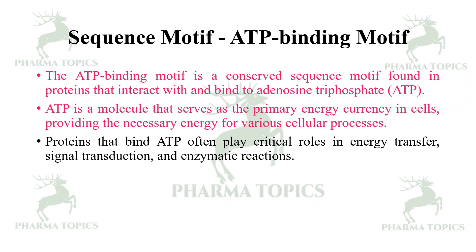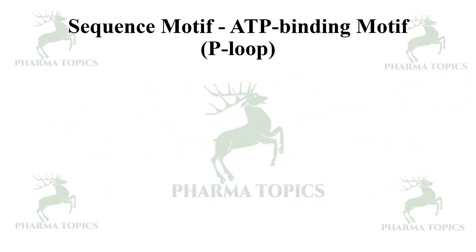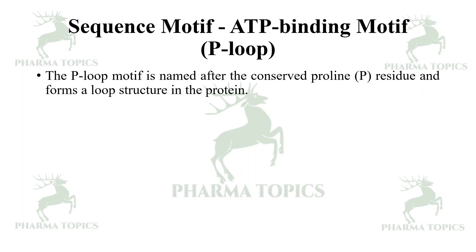Proteins that bind ATP often play a critical role in energy transfer, signal transduction, and enzymatic reactions. The motif contains conserved amino acid residues that are crucial for coordinating and stabilizing the binding of ATP. One of the most well-known ATP binding motifs is the P-loop or Walker A motif.